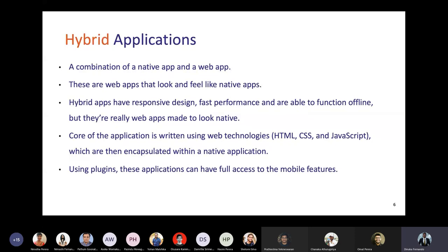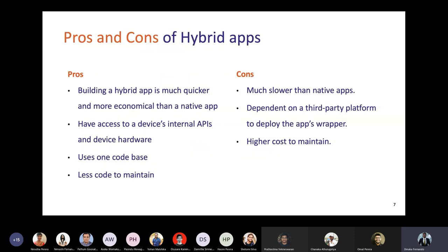Hybrid apps are written using JavaScript, CSS, and similar web-based languages, and this technology is encapsulated inside a native component. So it looks and feels like a native application. Using hybrid applications, you can also access hardware components like camera, GPS, and other features — just like a native application does.